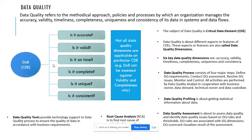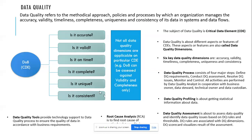Data quality is a very important aspect across these domains. If data needs to be valuable for the organization, it should comply with quality norms. Data quality includes various dimensions. For example, if there is a critical data element called date of birth, it should be validated against these six data quality dimensions. All dimensions may not be applicable for every data element — it depends on what kind of data element it is.